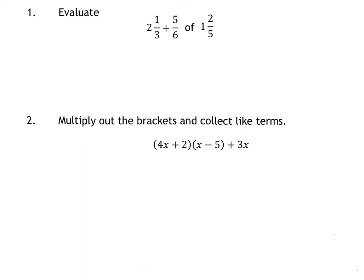Question 1 is a bodmas with fractions. Of means times in terms of fractions, so we'll be doing that calculation first. To multiply fractions you have to make them top-heavy, so this becomes 5 over 6 times 7 over 5. The 5s will then cancel down,